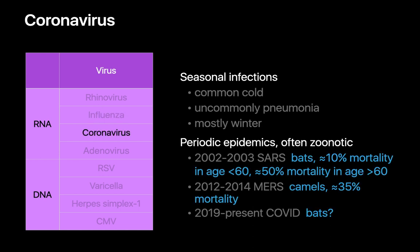Coronaviruses are a group of viruses. Many are relatively mild and account for around 15% of the common cold, mostly during winter. However, some coronaviruses can be quite severe, resulting in pneumonia epidemics such as SARS during the early 21st century, MERS about a decade afterwards, and most recently COVID. With SARS and MERS, we witnessed mortality rates sometimes as high as 50% in the elderly with MERS and around 35% with SARS.